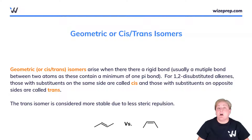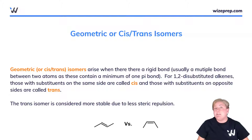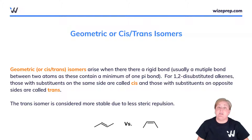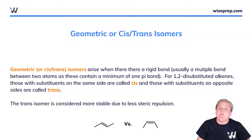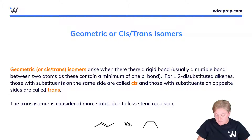The next type of isomers we're going to see are called geometric, or cis or trans isomers. Geometric isomers arise when there's a rigid bond. Rigid bonds result from pi bonds, which require p orbitals. So typically we're going to be looking at a multiple bond between two atoms containing a minimum of one pi bond, where the most common example by far is that of the alkene, or the carbon-carbon double bond. We're going to see a couple different versions of this.